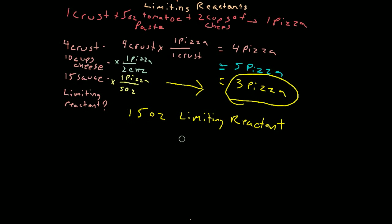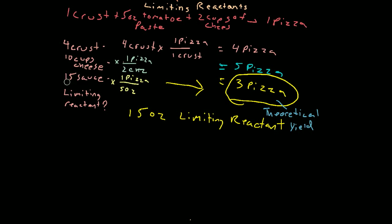Now that we've found our limiting reactant, let's look at another concept. We know that 15 ounces of sauce will produce three pizzas. That result — three pizzas — is called our theoretical yield. In theory, if you follow the recipe exactly and use every ounce of tomato sauce perfectly, you can produce three pizzas. That's the theoretical yield.